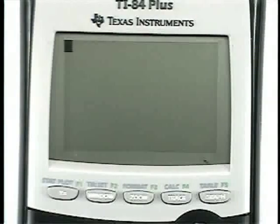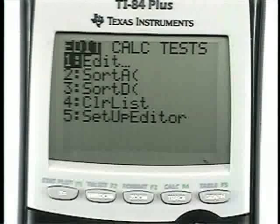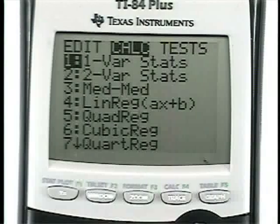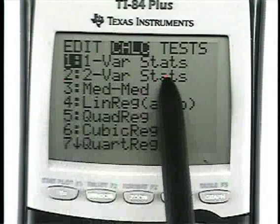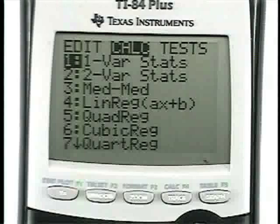To find the mean, go to STAT, then move over once to the right, select CALC, and select option one, one-var stats, which stands for one variable statistics.